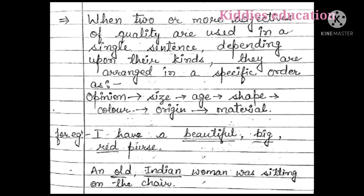When two or more adjectives of quality are used in a single sentence, they are arranged in a specific order depending on their kind. The order is: first we place opinion, then size, then age, then shape, then color, then origin, and last material. For example, if we have to use three adjectives of quality in a single sentence — beautiful, big, and red.